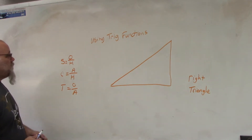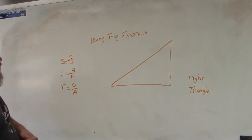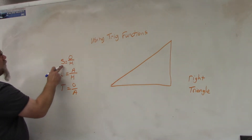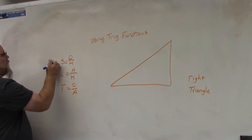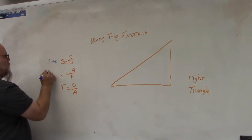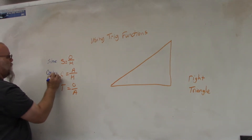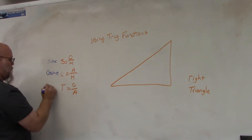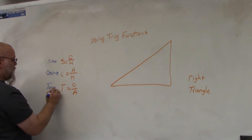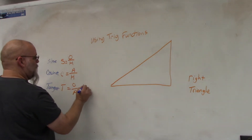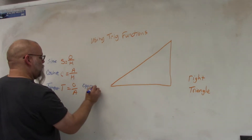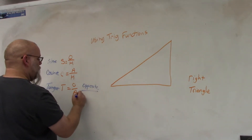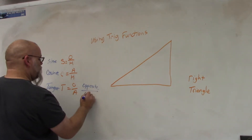So how do we use these trig functions? The first thing is what do they stand for. S stands for sine, C is for cosine, and T is for tangent. O stands for opposite, A stands for adjacent.